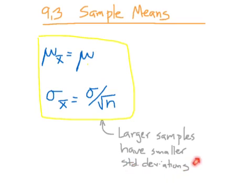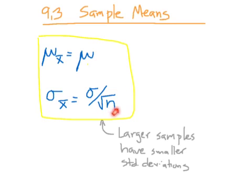This relates to the big idea that larger samples have smaller standard deviations. As you increase n, this quantity is going to go down. Now we can know exactly how it goes down. If you want your standard deviation of your sample distribution to be one-tenth of what it was before, you need a sample size 100 times larger, because it's under the square root. If you want this to be half as large, you have to make n four times as large.